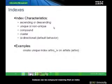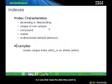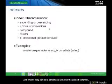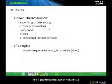Indices can be compound, meaning that an index can consist of more than one column. They can be clustered, meaning physically arranged in a way that maps the data they point to. Finally, they can be bidirectional, which is the default behavior, meaning you can traverse the index from top to bottom and vice versa.